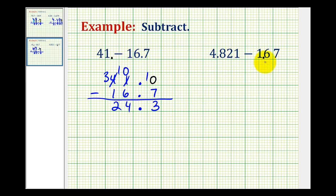Let's take a look at our last example. We'll write this vertically, so we have four point eight two one minus one point six seven. Let's add a zero here in the thousandths place value, so that we can perform the subtraction.